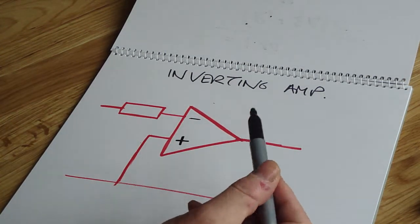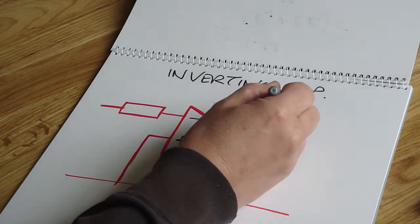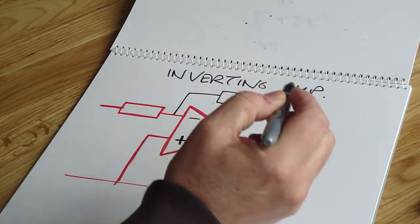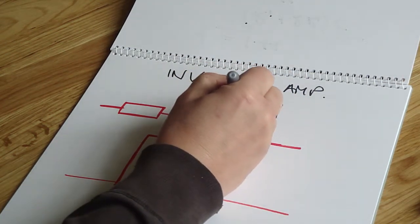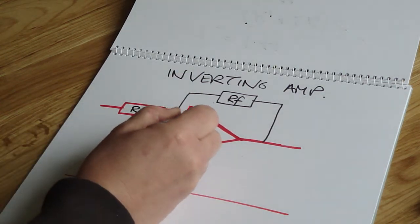With this one we are going for closed loop, so we're taking some of the output and we're feeding it back to the input. We call that RF, we call this one Rin, and that resistor's on the minus pin.